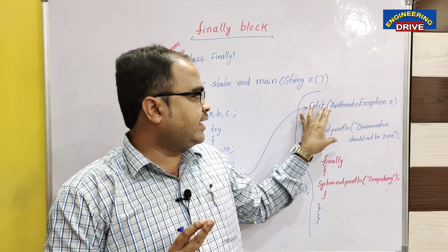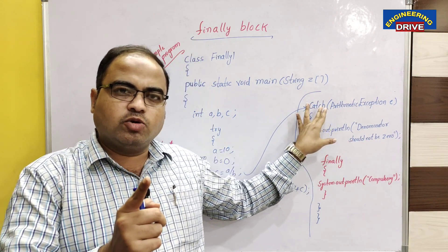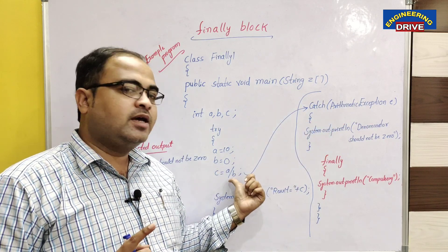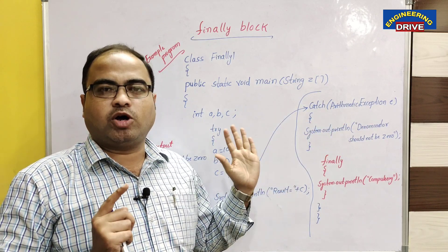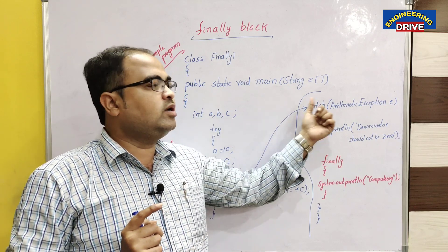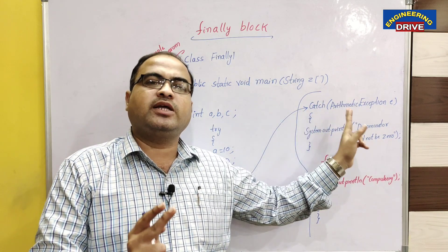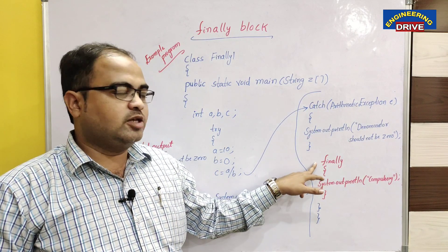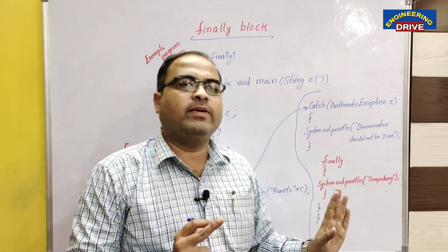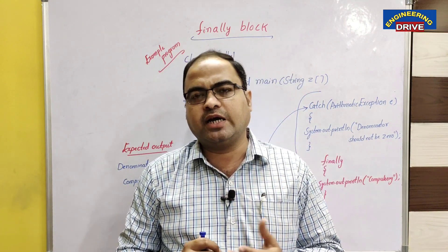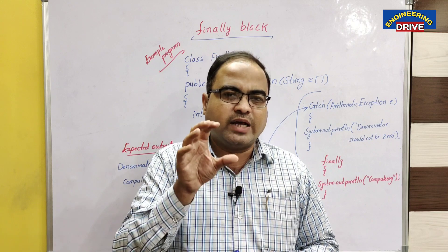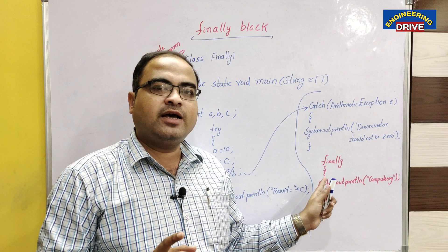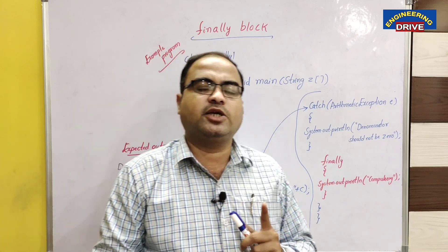The catch block will be executed only in one situation: when a runtime error occurs in the try block. When an exception occurs in the try block, the corresponding catch block will be executed; otherwise the catch block will not be executed. Whereas the finally block is executed irrespective of whether the exception has occurred or not — if we want to execute a certain piece of code mandatorily, we need to put that code in the finally block.